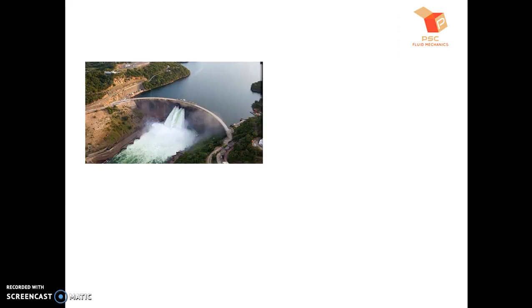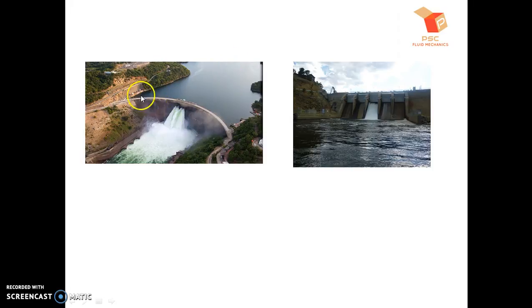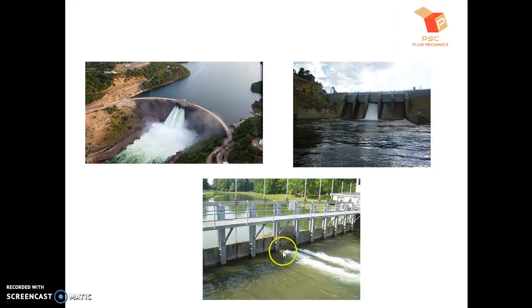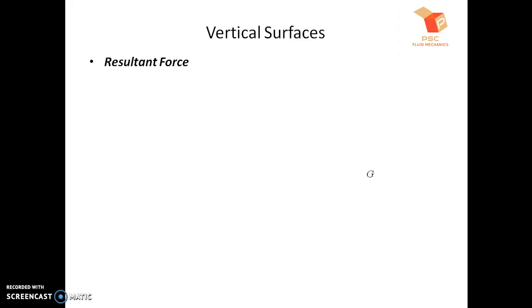Let us consider some practical examples where such situations occur. Here you can see a dam wall in contact with water at rest, exerting some pressure force onto it — that is what we are going to determine. That is a curved surface; later on we will see how to determine forces acting on curved surfaces. Here you can also see vertical plane surfaces submerged under water, with water exerting pressure force on them. This system must sustain that pressure, so we must design for that amount of pressure, and to do so we must determine what the resultant force is and where it acts.